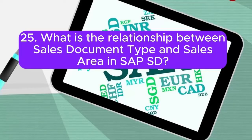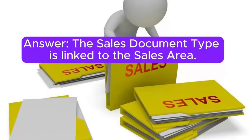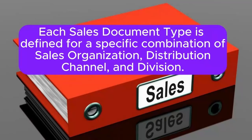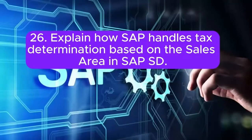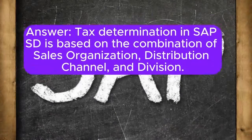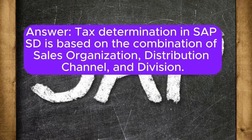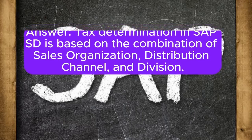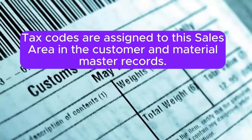Question 25: What is the relationship between sales document type and sales area in SAP SD? Answer: The sales document type is linked to the sales area. Each sales document type is defined for a specific combination of sales organization, distribution channel, and division. Question 26: Explain how SAP handles tax determination based on the sales area in SAP SD. Answer: Tax determination in SAP SD is based on the combination of sales organization, distribution channel, and division. Tax codes are assigned to the sales area in the customer and material master records.